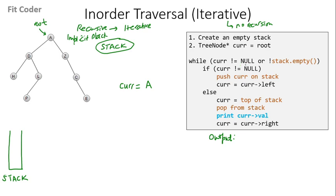Current is not null, so we go inside the while loop. We check the if condition — this is also true — so we push current onto the stack: we push A, and current will point to the left of A, which is D. We again check the while condition: current is not null, so we push D onto the stack and current points to left of D, which is H. We again check the while condition: current is not null, so we push H and current will point to the left of H, which is null.